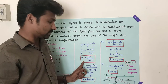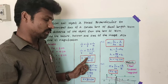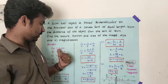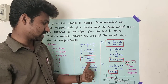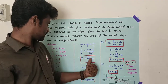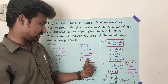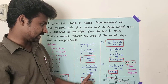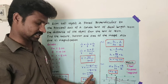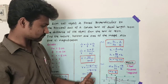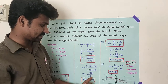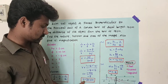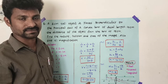Taking the reciprocal, v = (u × f) divided by (u plus f). Substituting the values — u equals minus 15 centimeter and f equals 10 centimeter — we get v = (minus 15 × 10) divided by (minus 15 plus 10), which is minus 150 divided by minus 5. The negatives cancel, giving v equal to 30 centimeter. So the image distance is 30 centimeter.